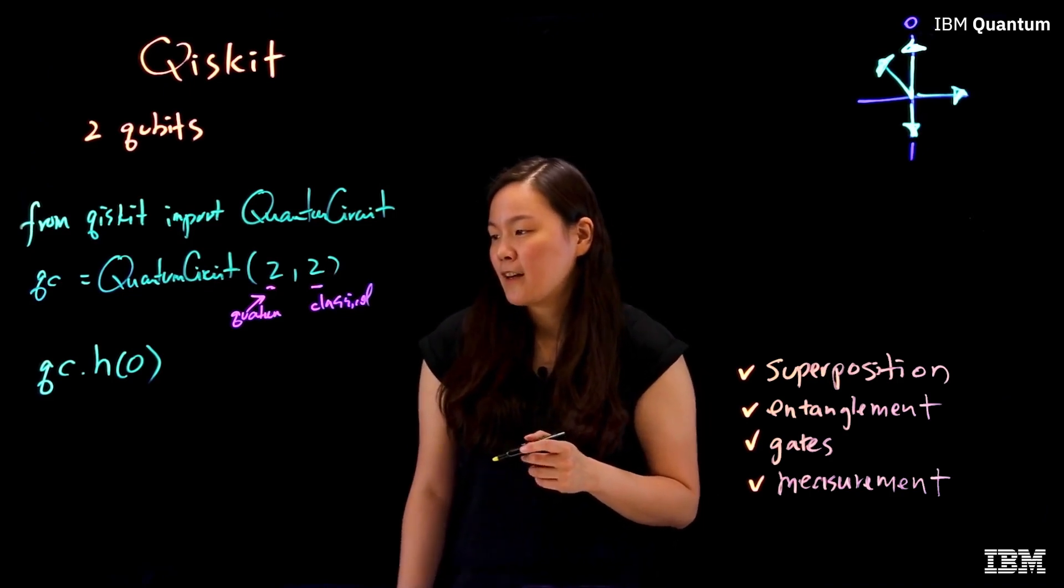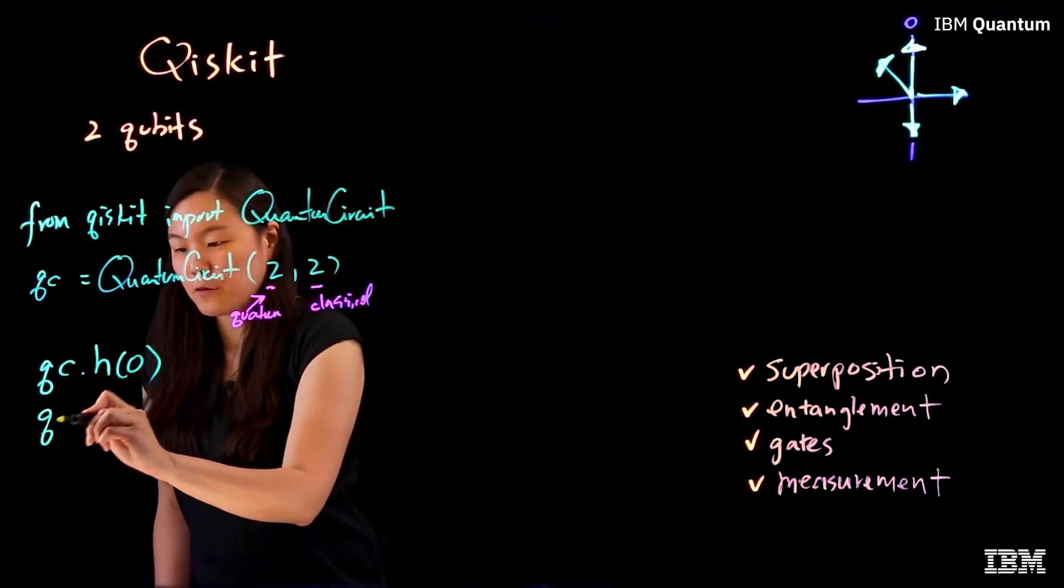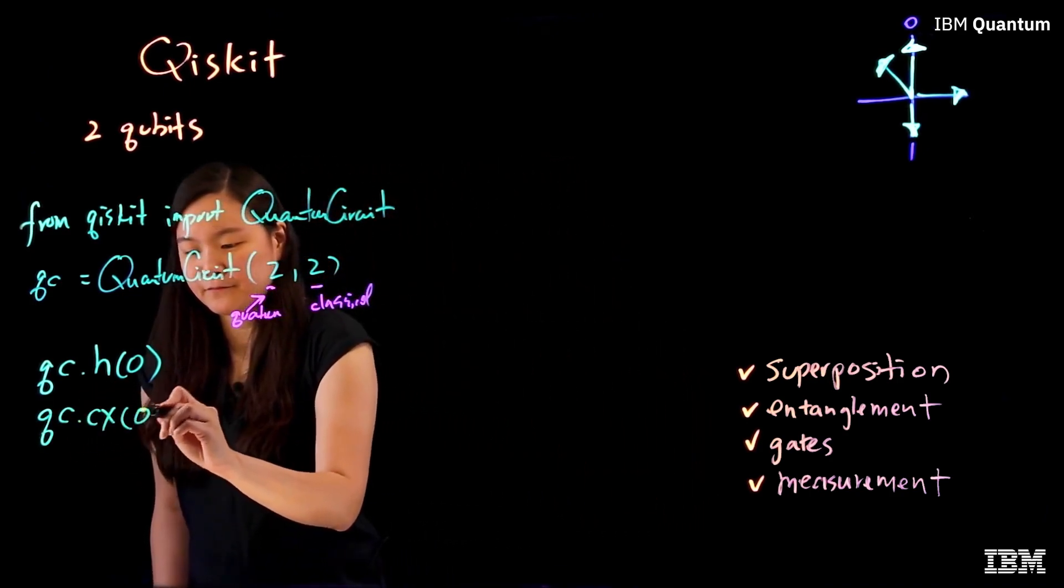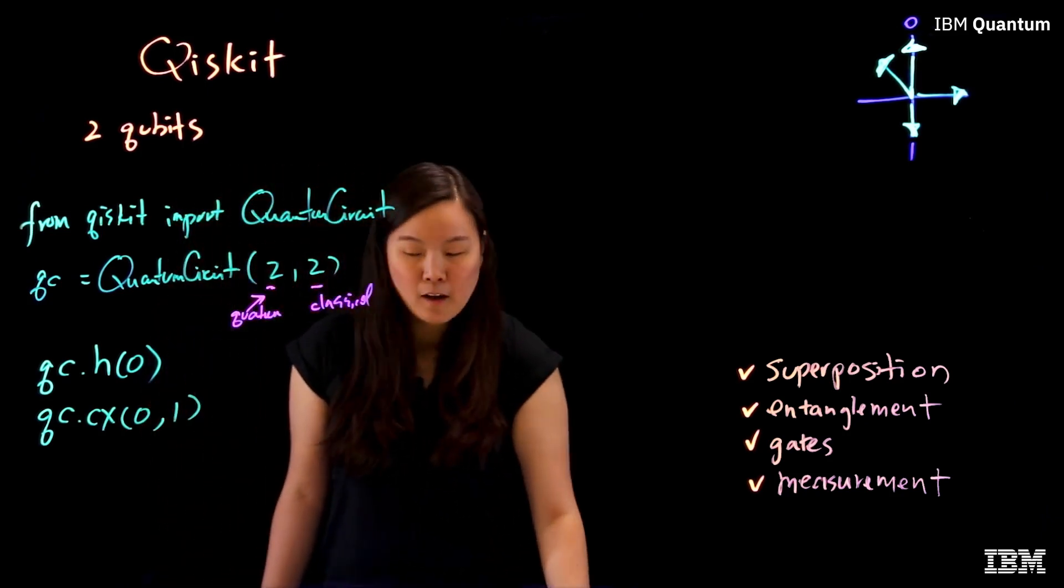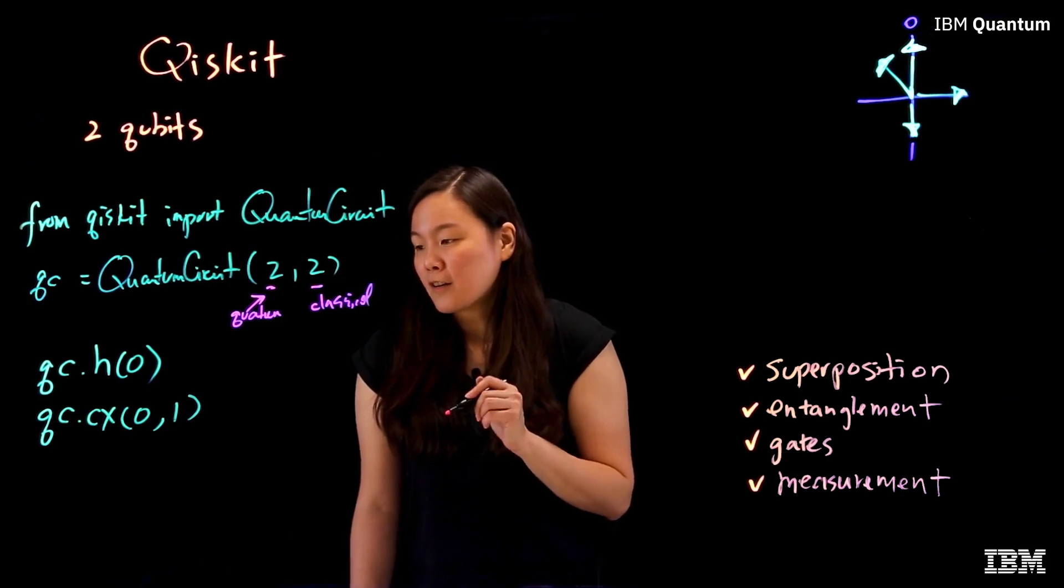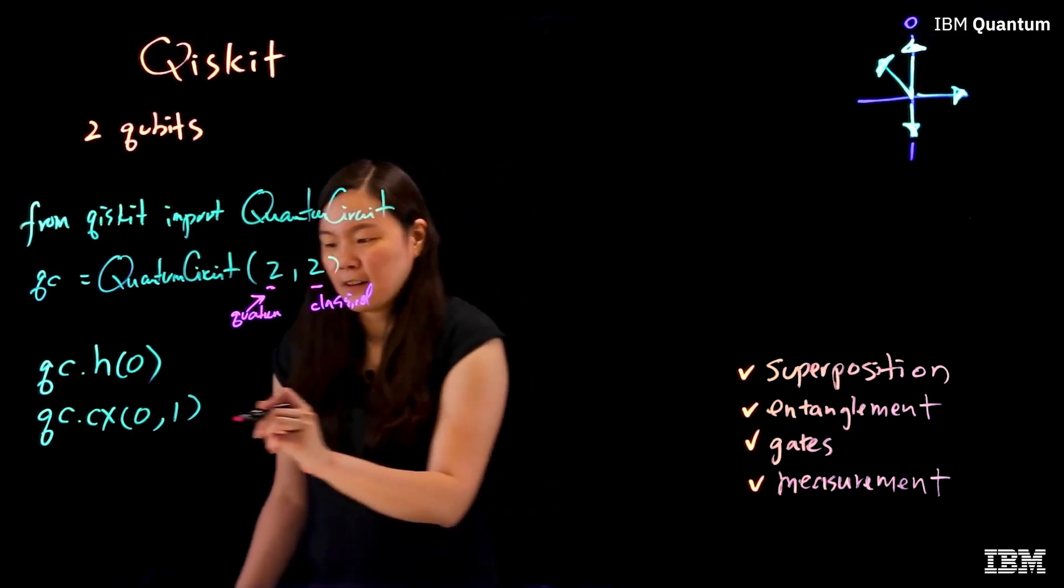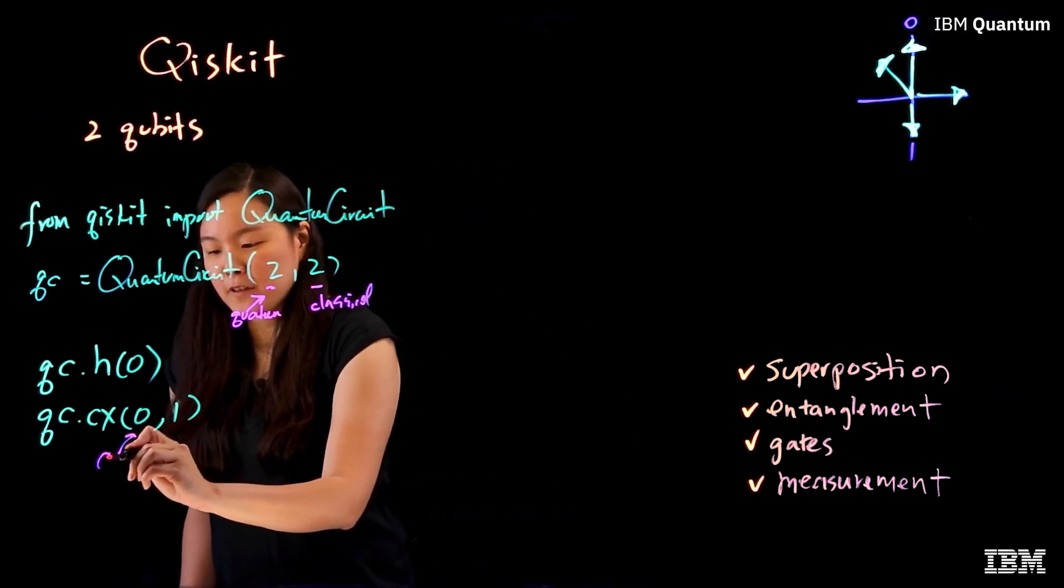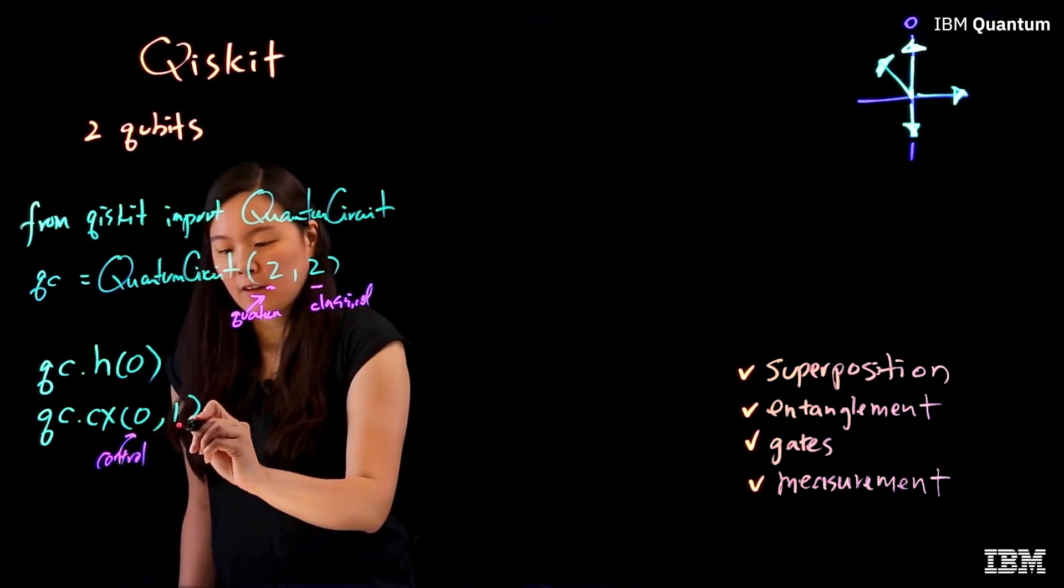The next gate we need is the control knot gate, or CX for short. The control knot gate is a conditional two qubit gate. It has a control qubit and a target qubit.